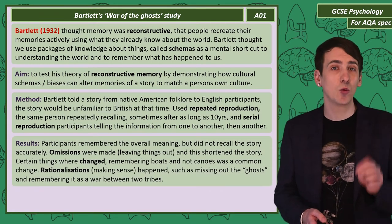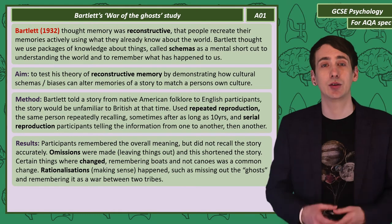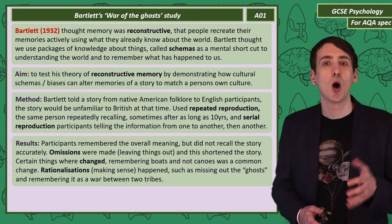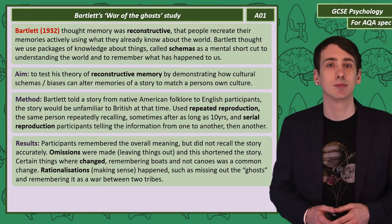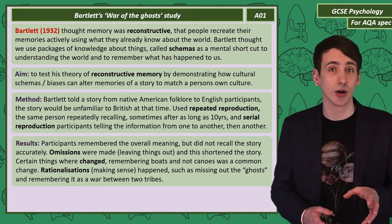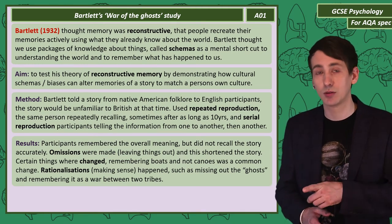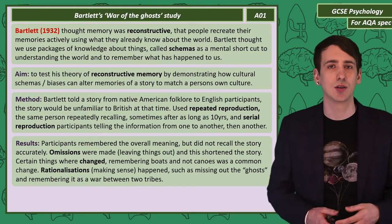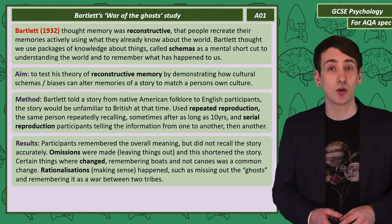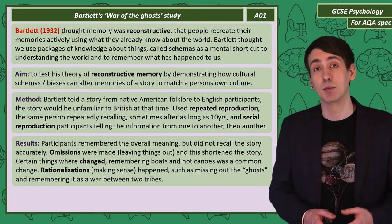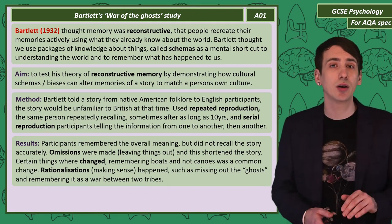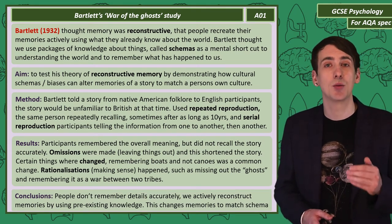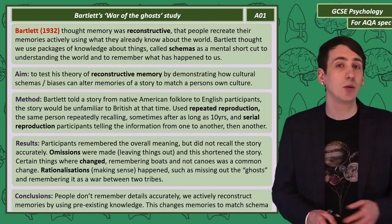The results were that participants would remember the overall meaning of the story, but not accurately. Often participants would leave out details — omissions — that would shorten the story. They also changed some parts of the story; a common change was remembering boats, not canoes. Participants would also make rationalisations, meaning they would change parts of the story so it made more sense to them. On the basis of these results, Bartlett concluded that memory is actively reconstructed and memories are changed to match schema.